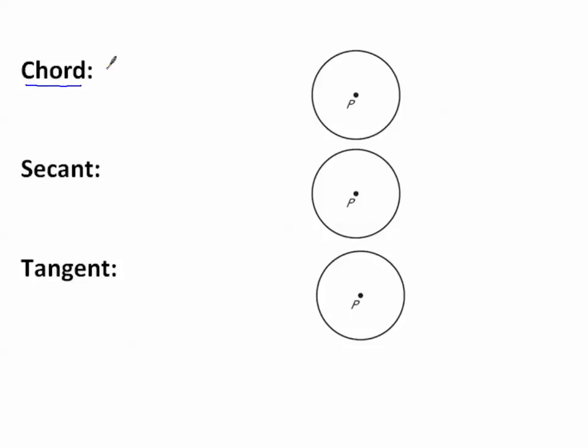A chord is a segment connecting two points on a circle. If I draw point C and point D and I connect those two with a segment, that creates a chord. So I would say segment CD is a chord of circle P.